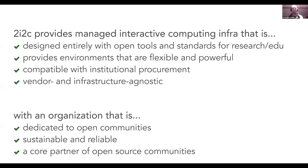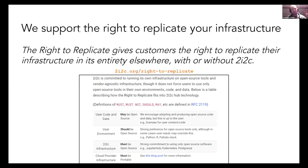One thing I want to highlight is what we call the 'right to replicate,' which we think is really important for open infrastructure and open science. The idea is that we want you to have the right to replicate your entire infrastructure stack in its entirety, anywhere else, with or without 2i2c. We don't want you to be reliant on 2i2c to run your stack — we just want to make it easy for you to run an entirely open source stack if that's what you want.